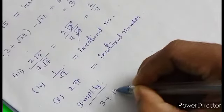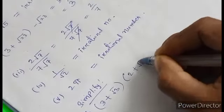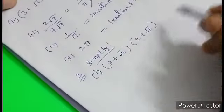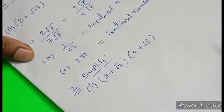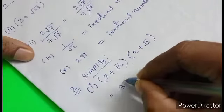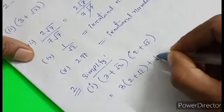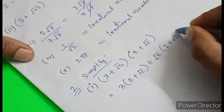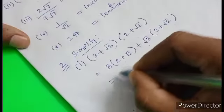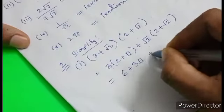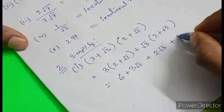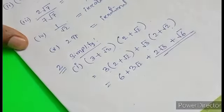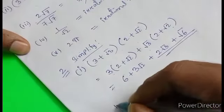Roman numeral one: (3 plus root 3)(2 plus root 2). This is like (a plus b)(c plus d) — simple multiplication. 3 into 2 is 6, then 3 root 2, plus 2 root 3, plus root 3 into root 2 which is root 6. So the answer is 6 plus 3 root 2 plus 2 root 3 plus root 6.